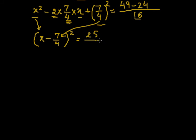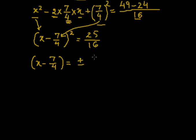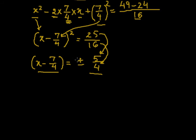So we have 25 by 16. Now step number 3 is to take the square root. After taking the square root, the left hand side is x minus 7 by 4, which is equal to plus or minus 5 by 4. Why 5 by 4? Because the square root of 25 is 5 and the square root of 16 is 4. The right hand side contains two signs — plus and minus — so we have to consider both signs.